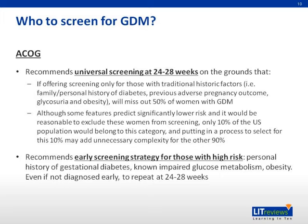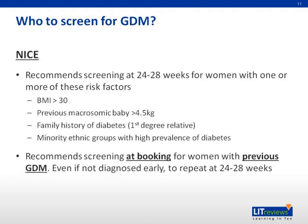If someone is known to be at high risk, ACOG recommends earlier screening. Even if not diagnosed early, they are recommended to repeat the test at 24 to 28 weeks of gestation. NICE in the UK takes a more focused approach, recommending screening at the same gestational window but only for those with one or more risk factors. The highest risk factor is a previous experience of GDM, for whom screening occurs at booking rather than 24 to 28 weeks, with a repeat test if not initially diagnosed.